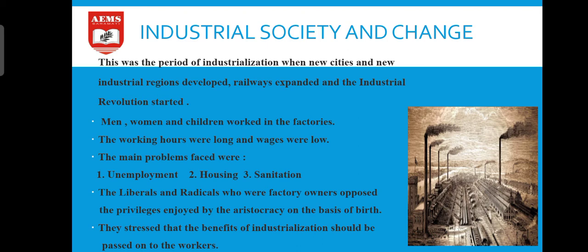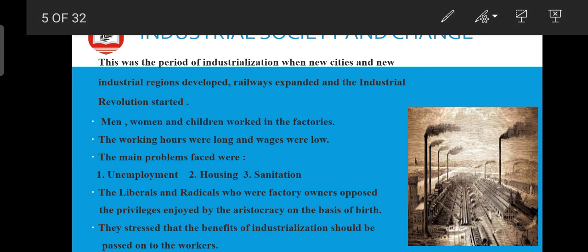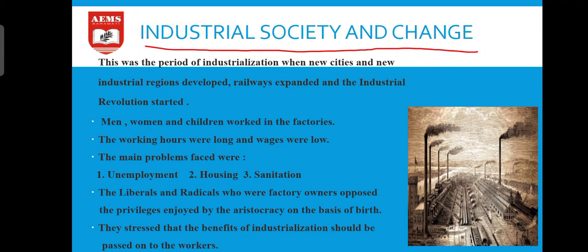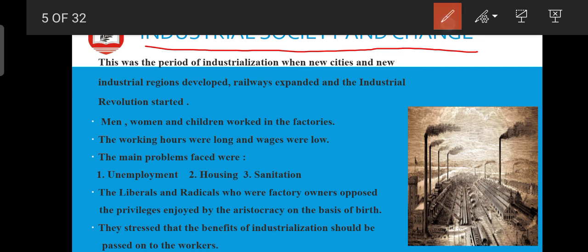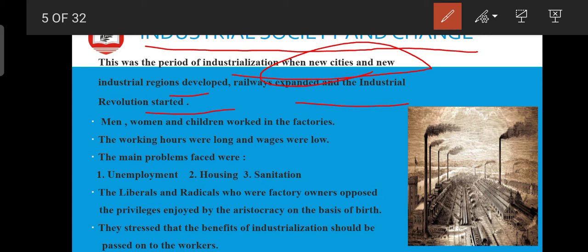The next topic is industrial society and change, which is another reason for revolution. When industrial society came and industries developed, the needs and demands of the people changed, and a new type of system came into existence. This was a period of industrialization when new cities and industrial regions developed, railways expanded, and the industrial revolution started. When people began using industries, the urban population increased.